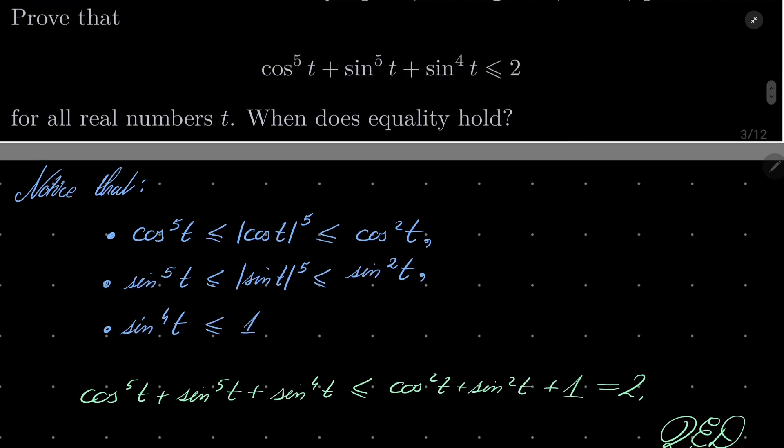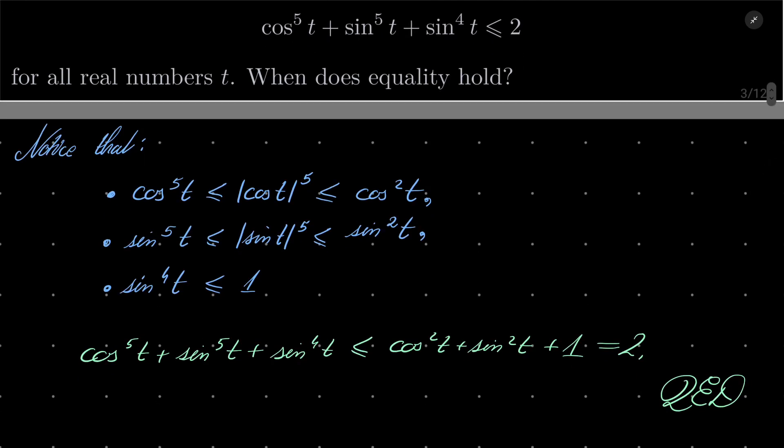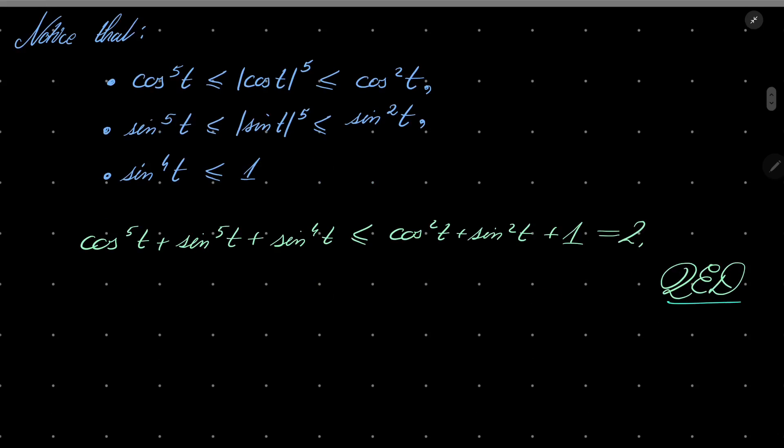That proves that our inequality is, in fact, true. But when does equality happen? Well, for equality to happen, we must have equalities in every one of these five places. We have to.